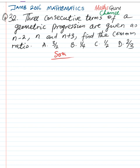All right, so we have these terms: n-2, n, and n+3. In geometric progression, GP, the ratio of the second and the first term is the same as the ratio of the third and the second.